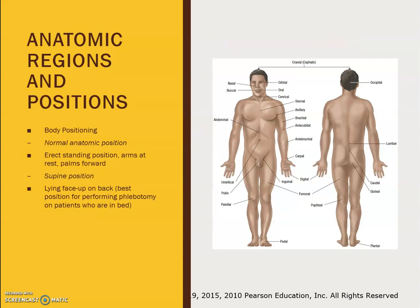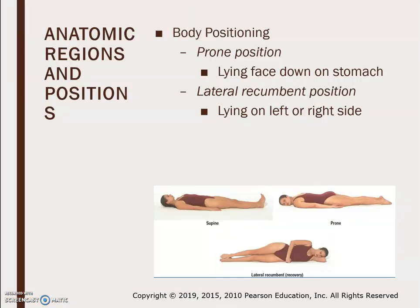Body positioning: the normal anatomical position is erect standing with arms at rest and palms forward. The supine position — lying face up on the back — is the best position for performing phlebotomy on patients in bed or those with a history of fainting. Prone position is lying face down on the stomach. Lateral recumbent is lying on the left or right side. In inpatient settings, we generally draw patients who are supine on their back with their head slightly elevated.